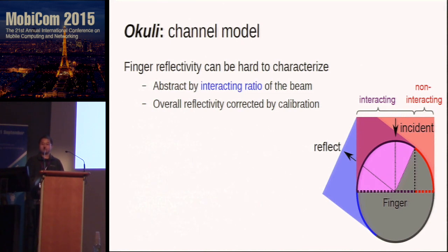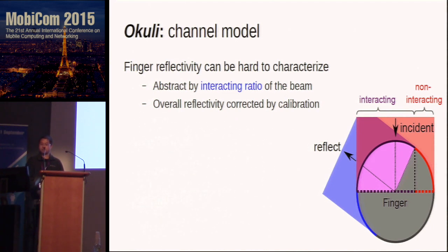We find that the finger's reflectivity can be quite hard to characterize, so we decided to approximate the cross-section of the finger with a circle and use the intercepting ratio of the incident beam to characterize the reflectivity. Since there is an angle between the incident and the reflected beam, only a part of the incident beam actually gets reflected into the PD, and this ratio is in proportion to the reflectivity. There may also be user-dependent reflectivity variations, which can be corrected by a one-point runtime calibration.